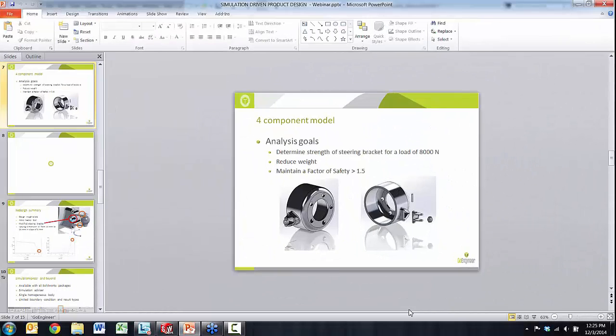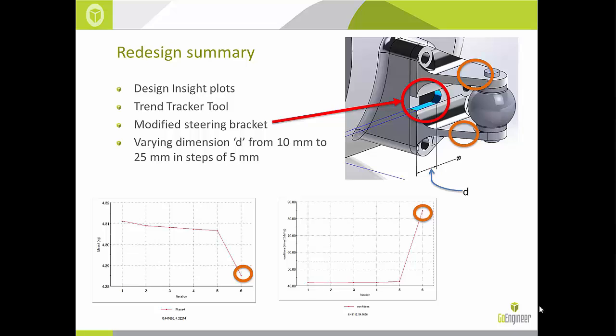To summarize the redesign process: areas contributing least to load-bearing were narrowed down with the Design Insight plot, directing material removal to those areas without substantially affecting structural integrity. Modifying the base of the bracket decreased weight without causing failure under the static load test, but modifying the flange thickness indicated component failure. The key message is that with SOLIDWORKS Simulation plotting tools, we could control the direction of product redesign, and coupled with the Trend Tracker, run what-if scenarios and derive immediate strength information without modifying the simulation setup.